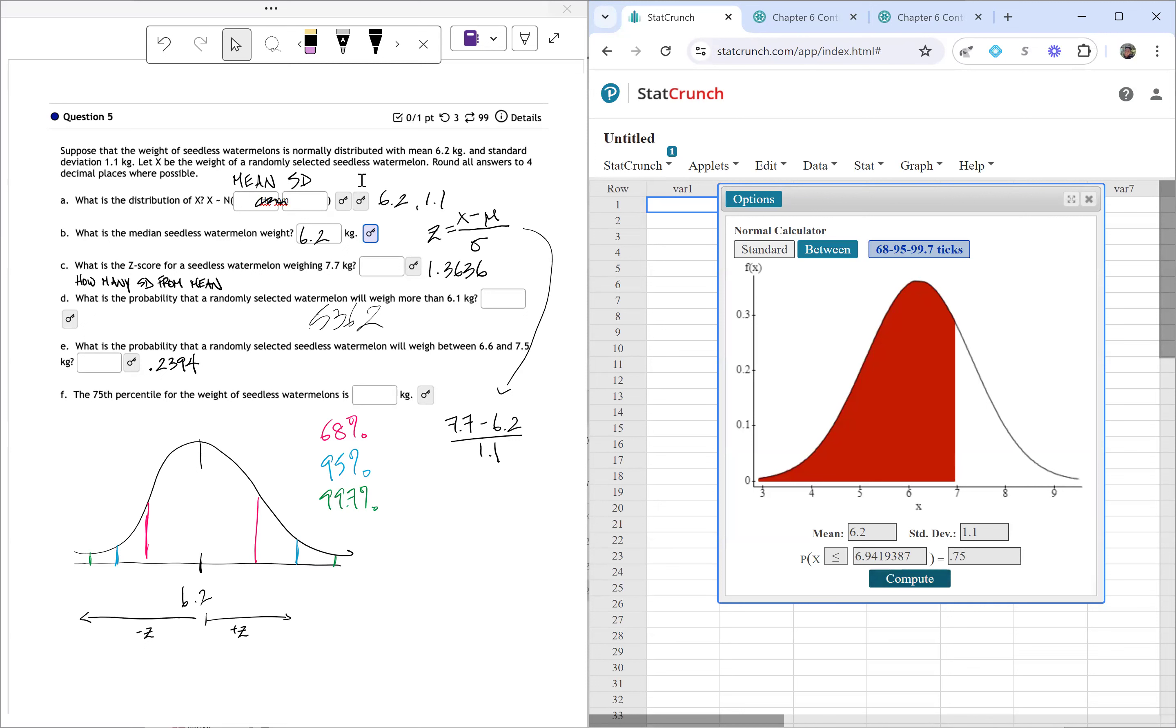That means that in my picture, I should see most of the area under the bell curve shaded. And now when I look at my values, StatCrunch tells me that the 75th percentile is going to be at 6.9419 kilograms. So I can go ahead and write that down, 6.9419 kilograms, and that is going to be the 75th percentile of seedless watermelons. So if we find a watermelon that weighs 6.9419 kilograms, that means 75% of the other watermelons weigh less than this particular watermelon.